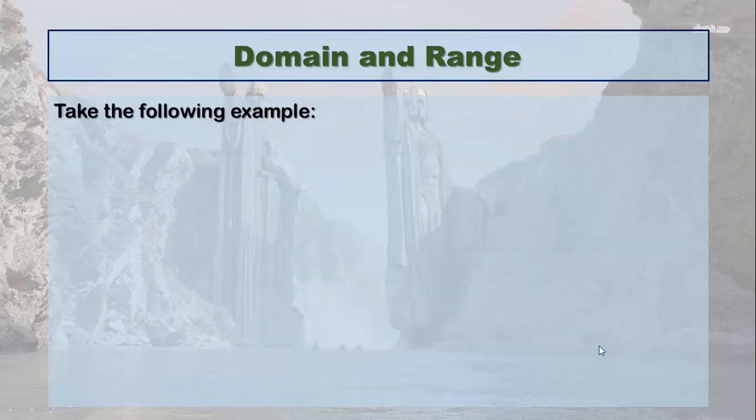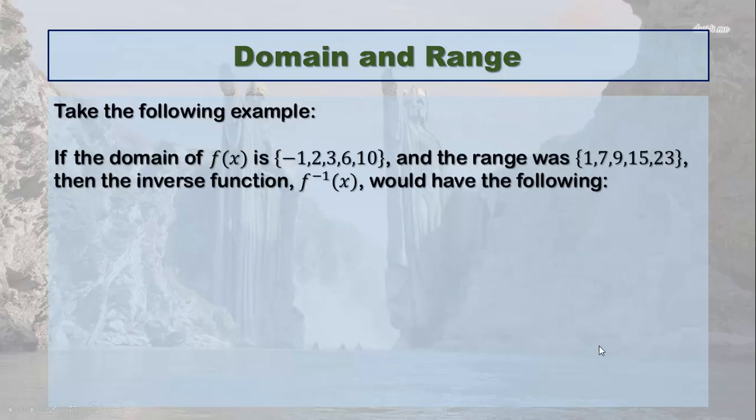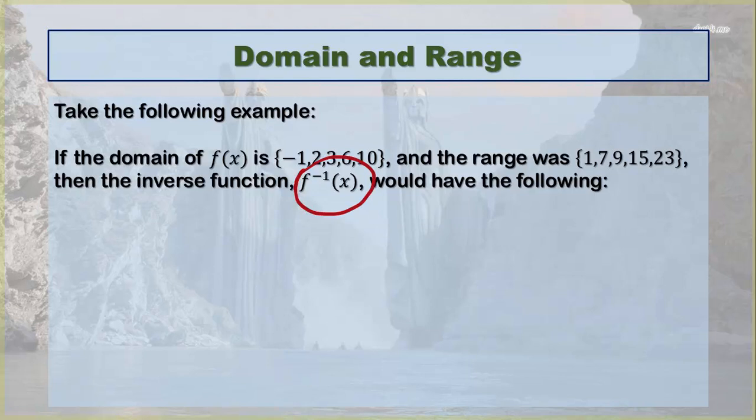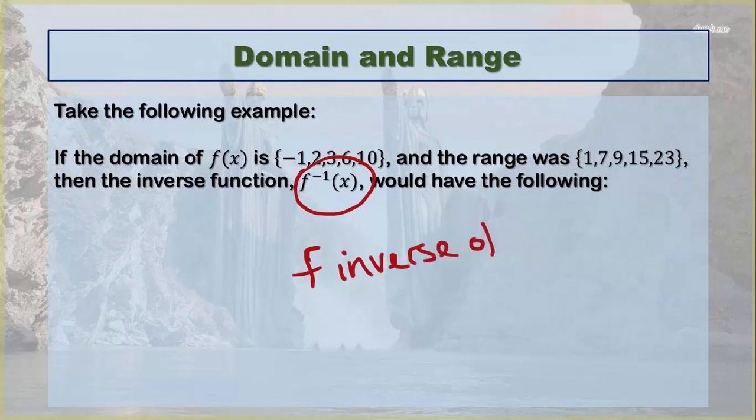Take the following example. If the domain of f(x) is {−1, 2, 3, 6, 10}, and the range is {1, 7, 9, 15, 23}, then the inverse function, which is notated like this, and that's called f inverse of x. It's not f minus 1. The inverse function would have the following: Its domain would be {1, 7, 9, 15, 23}, exactly what the range of the original was.